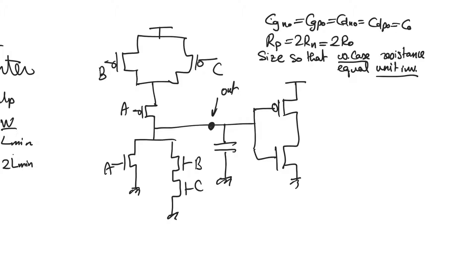The time constant consists of resistance and capacitance. The capacitance CL does not depend on the input value — it is constant in all cases, so worst-case does not affect capacitance. Worst-case and best-case affect resistance. We are talking about input combinations that give us the worst resistance possible. The worst resistance occurs when we have a single active path, either in the pull-down or pull-up network.